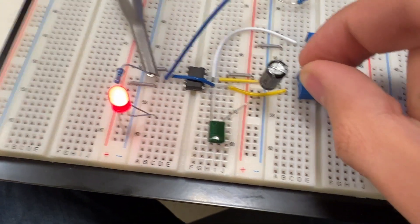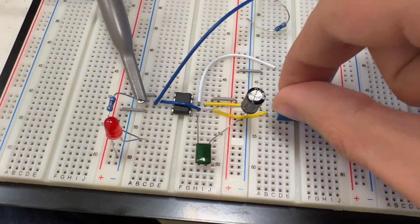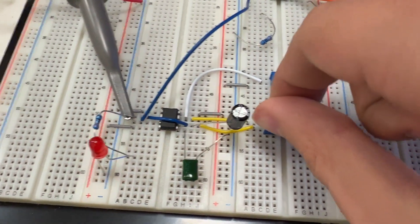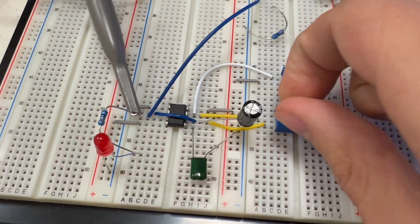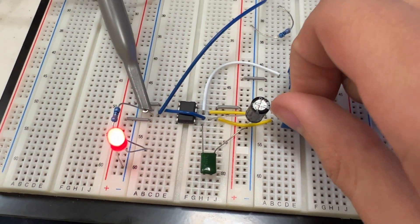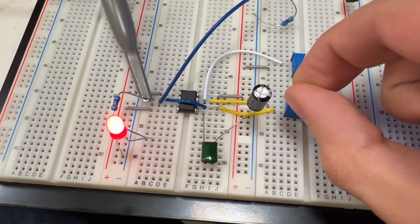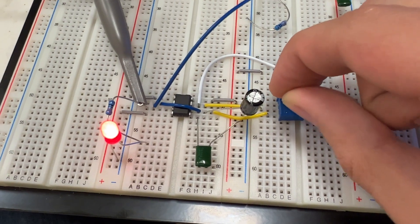And this other potentiometer here changes both the time on and the time off. So if we bring this all the way over, you can change the frequency and the tone simultaneously.